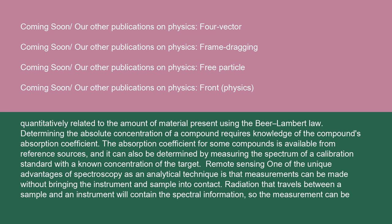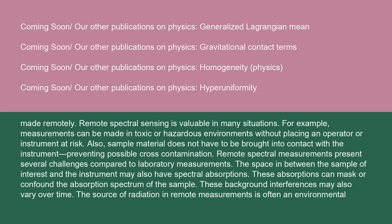One of the unique advantages of spectroscopy as an analytical technique is that measurements can be made without bringing the instrument and sample into contact. Radiation that travels between a sample and an instrument will contain the spectral information, so the measurement can be made remotely. Remote spectral sensing is valuable in many situations. For example, measurements can be made in toxic or hazardous environments without placing an operator or instrument at risk. Also, sample material does not have to be brought into contact with the instrument, preventing possible cross-contamination.